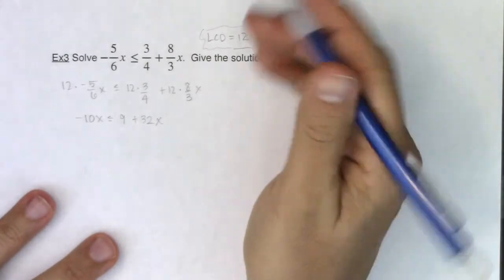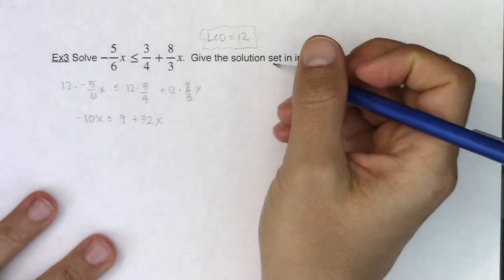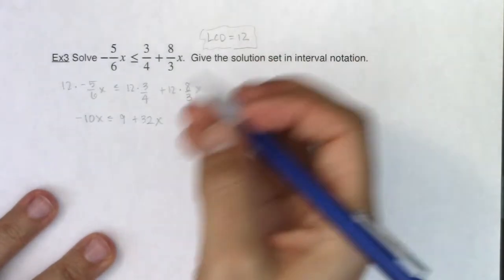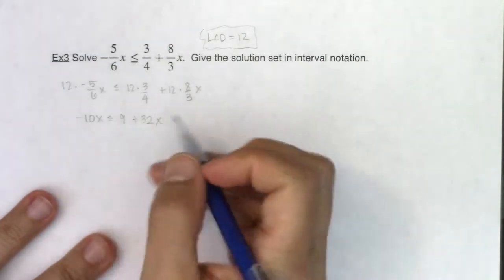It's just for me personally, even though I like fractions, I just like to knock them out with LCDs. It makes my life a little bit easier. All right, now again, for most of you, I think you would subtract 32x from both sides, which is great.